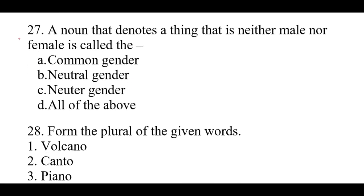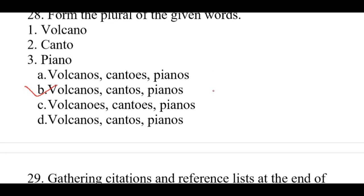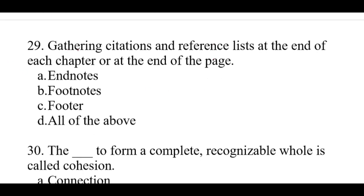Question number 27: A noun that denotes a thing that is neither male nor female is called. The right option is C: Neuter gender. Question number 28: Form the plural of the given words — one volcano, two canto, three piano. The right option is B: Volcanoes, cantos, pianos. Question number 29: Gathering citations and reference list at the end of each chapter or at the end of a page. The right option is A: Endnotes.